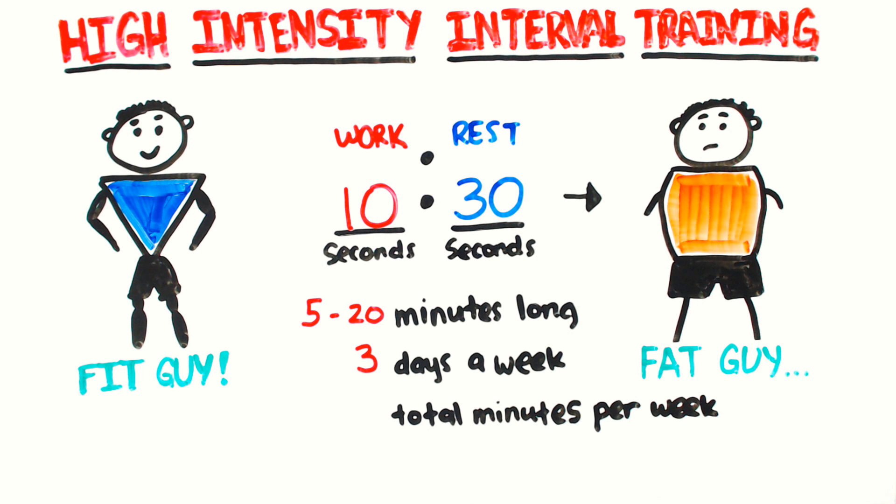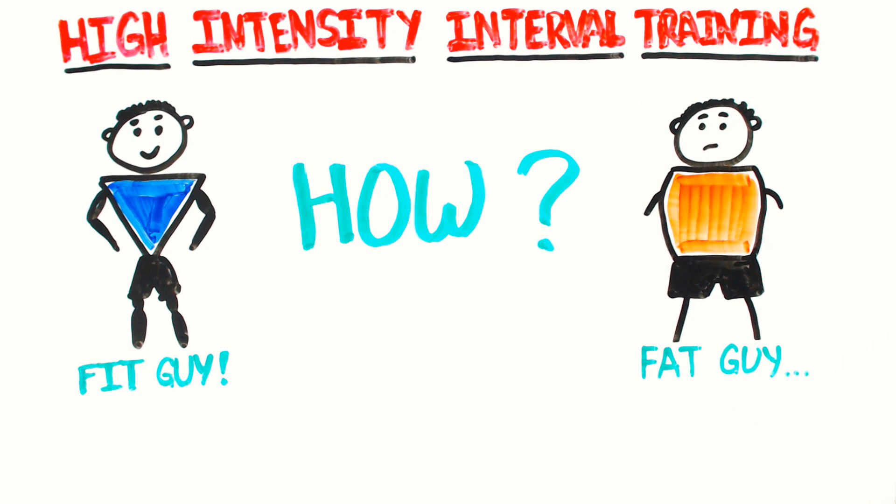When added together, that's a maximum of only 60 minutes of exercise per week. So what's the science behind this?